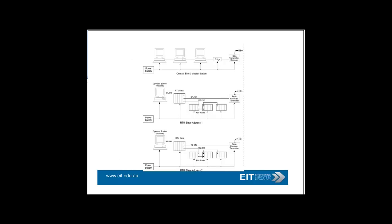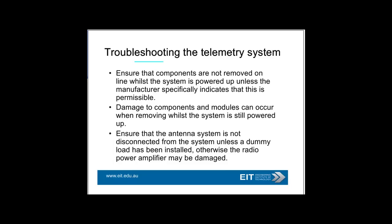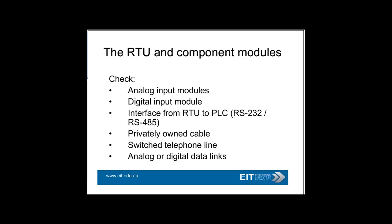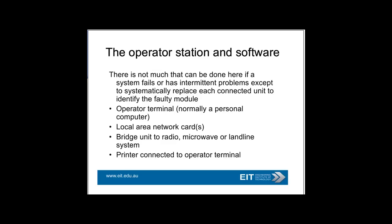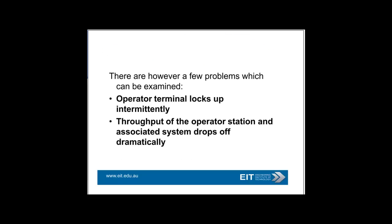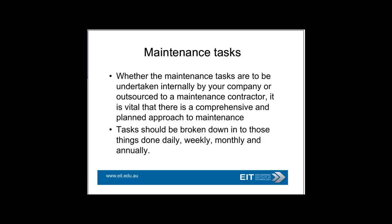When troubleshooting, don't remove components online because you may have a problem with failure of components. With antennas, make sure that your dummy load is installed, otherwise you may have a problem with your power amplifier and fire risk. Typical components that need to be checked include your analog inputs, digital inputs, and the RTU. Also check operator station software, network cards, and other things like the bridge or switch. Typical problems include operator terminal locking up intermittently and a dramatic drop-off in data. You could find issues with noise and interference causing those sort of problems.